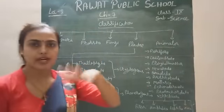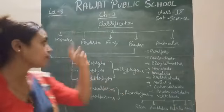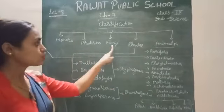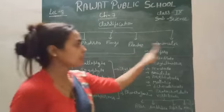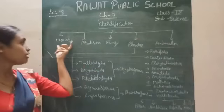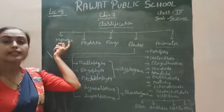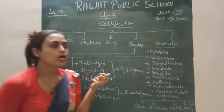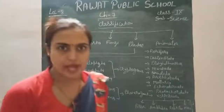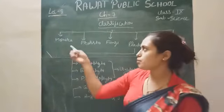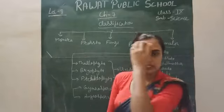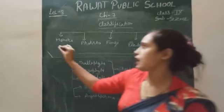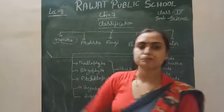We divided living organisms into 5 classes: Monera, Protista, Fungi, Plantae, and Animalia. Monera are unicellular prokaryotes — meaning bacteria. Bacteria are present only in the class Monera.